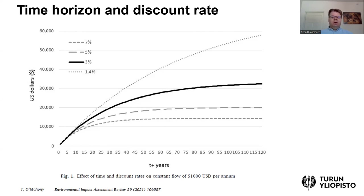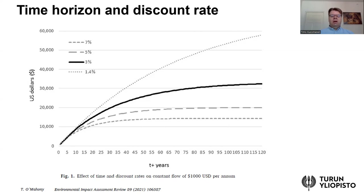Notice how the curves become very flat. With a three percent discount rate, anything that happens after about 50 years becomes almost completely marginal. With five percent — the dashed line, second from the bottom — there is virtually no impact after around 85 or 90 years. However, at 1.4 percent the curve still continues to capture impacts after 100 years.